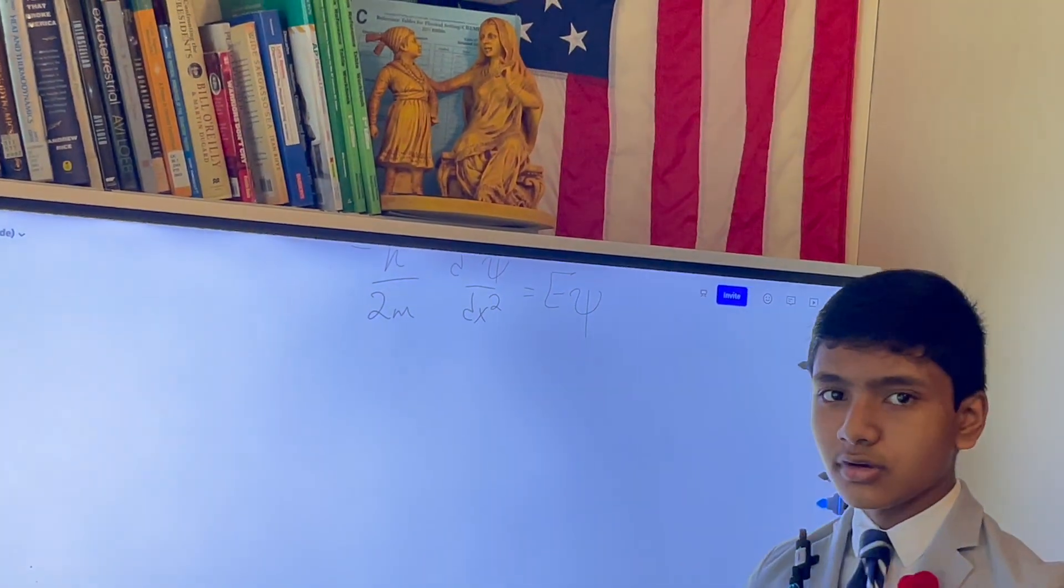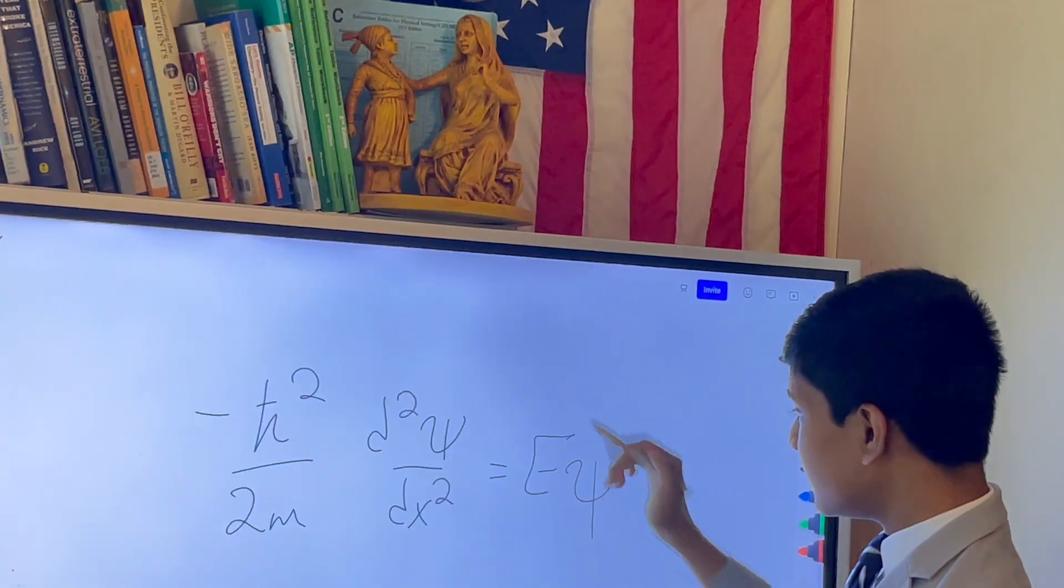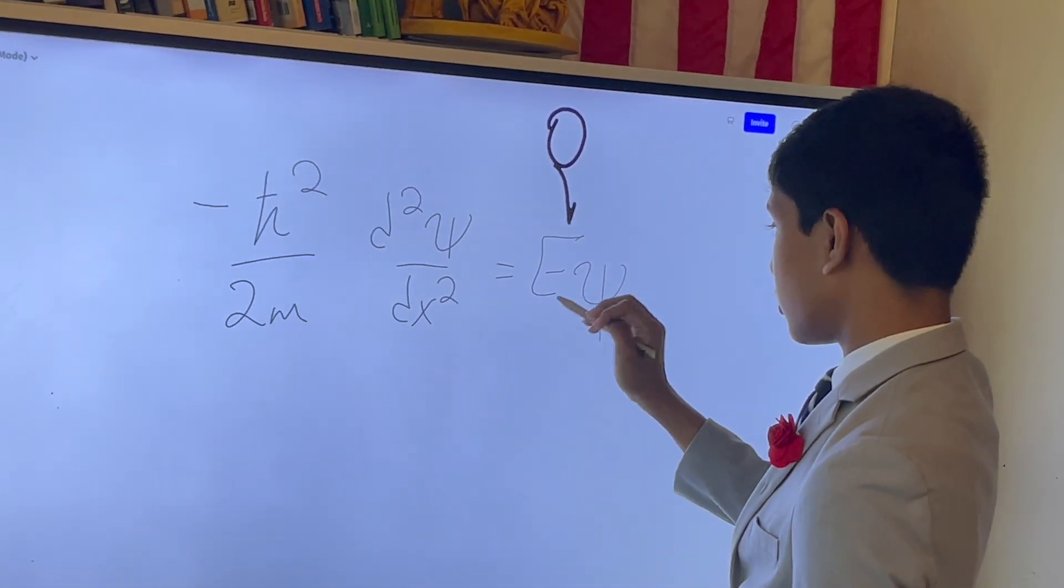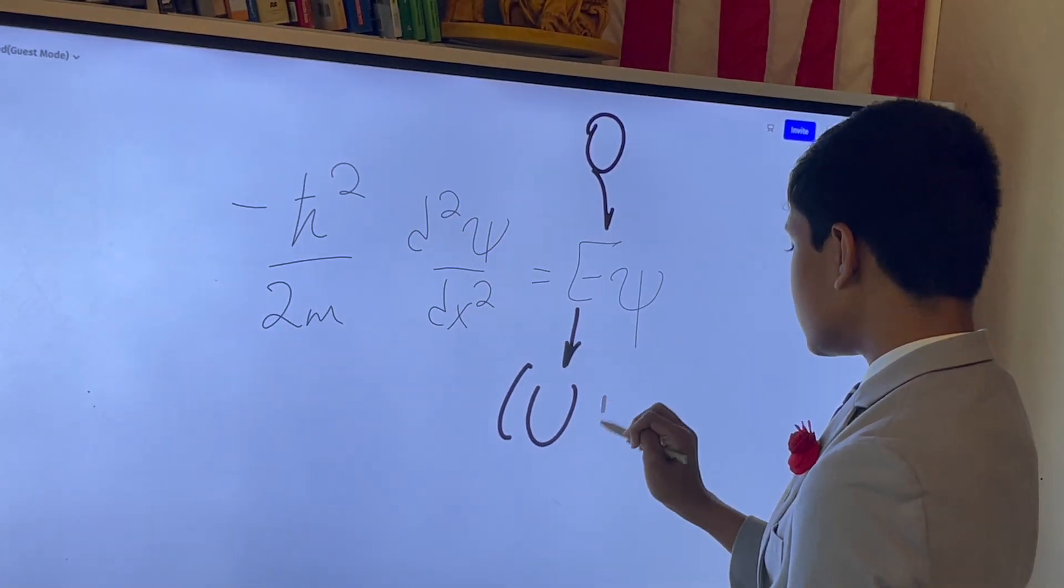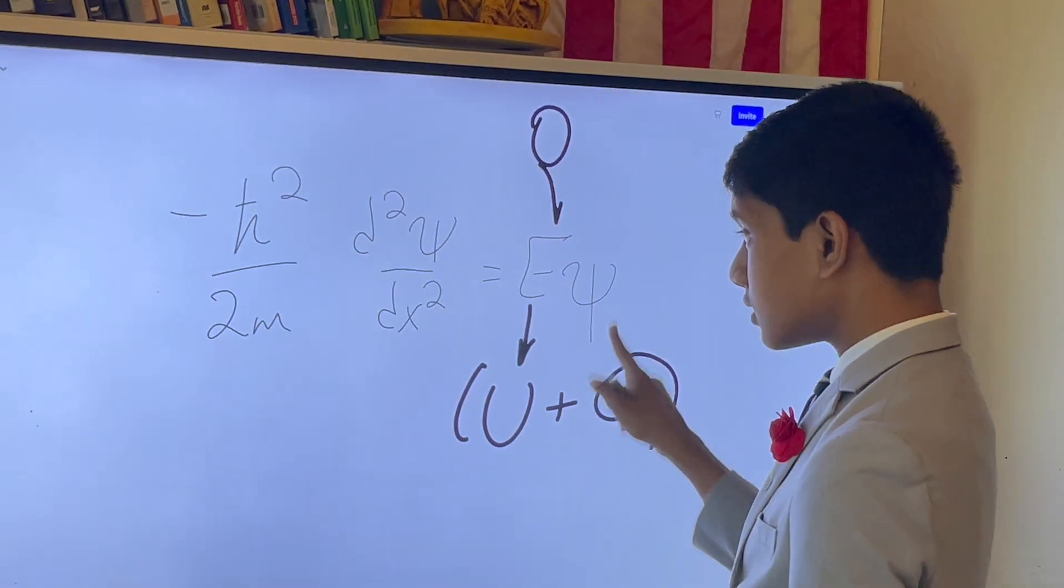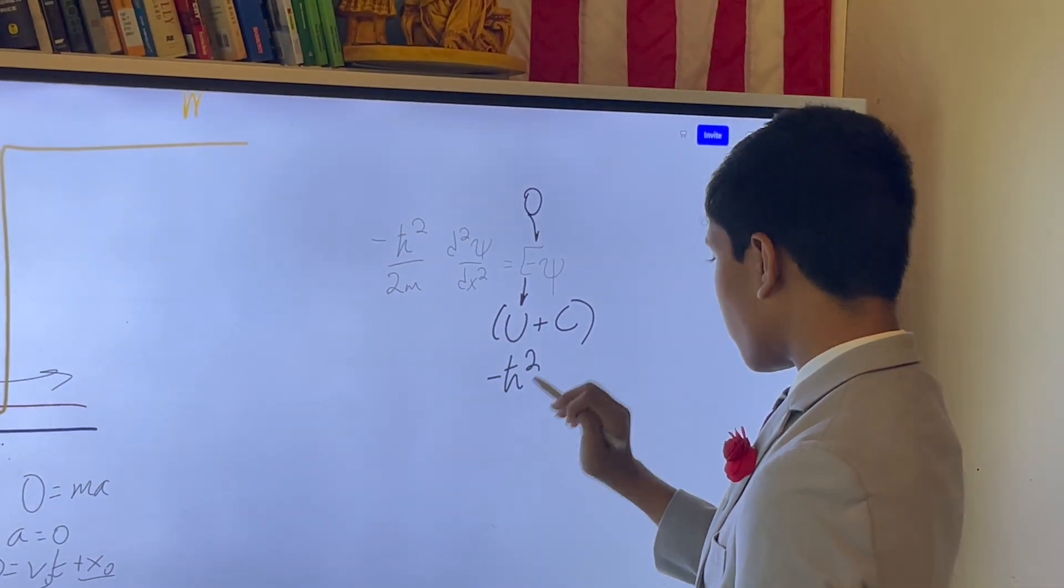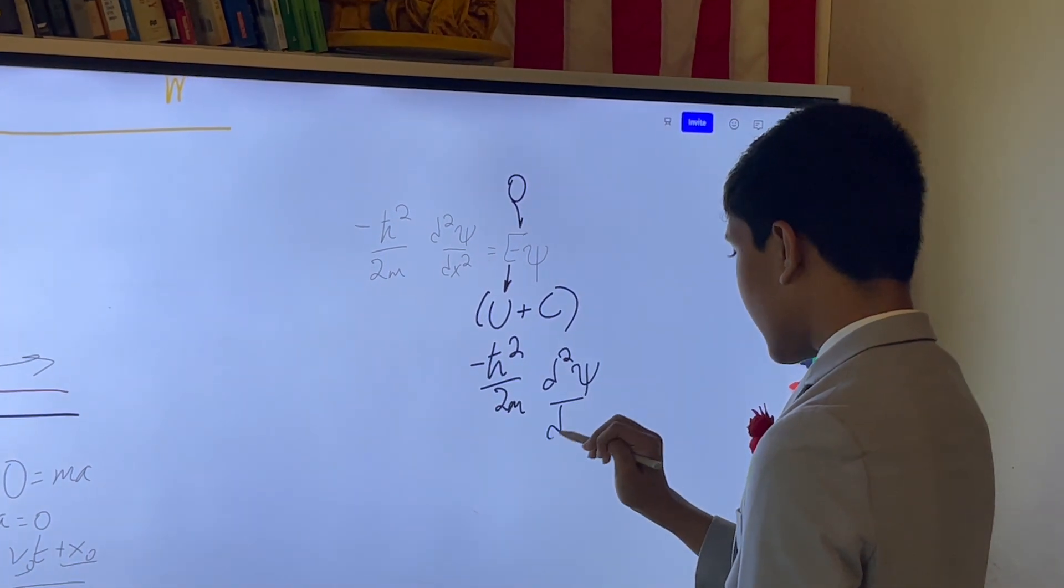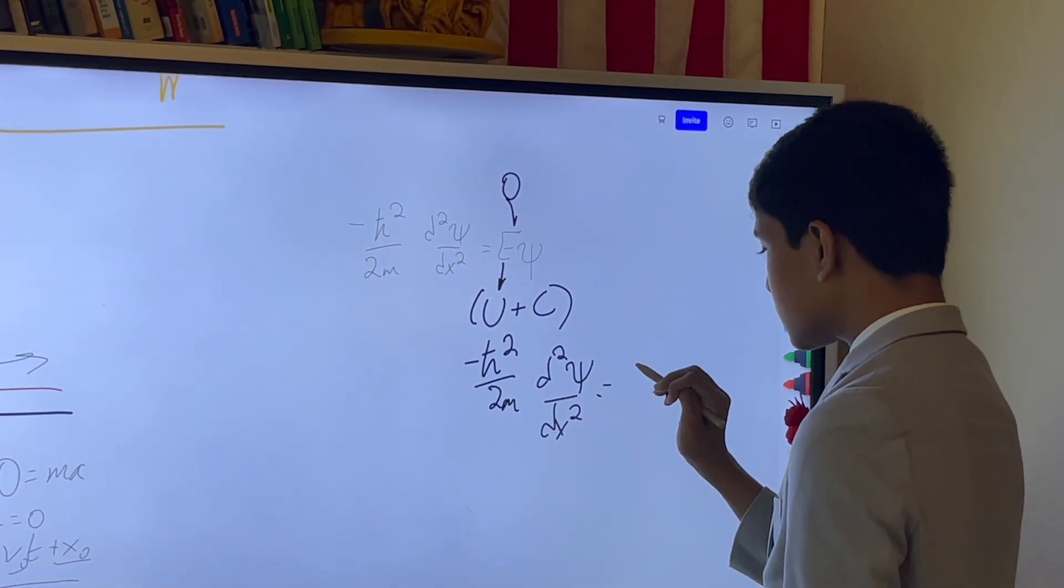As a reminder, when we set this to zero, this is potential plus a constant. Which means when we set this to zero, this gives us an equation of the form minus h bar squared over 2m d squared psi dx squared is equal to c psi.